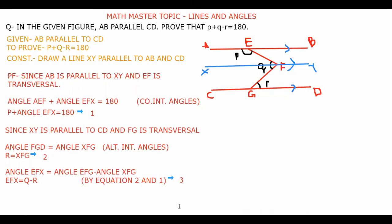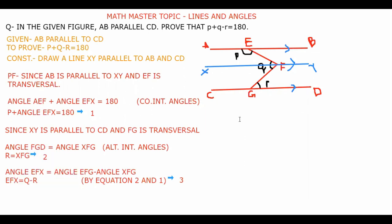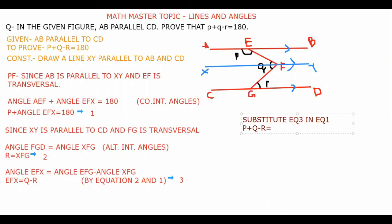Now substitute the value from Equation 3 into Equation 1. We get: p + (q - r) = 180°, which gives us p + q - r = 180°. And this is exactly what we had to prove.